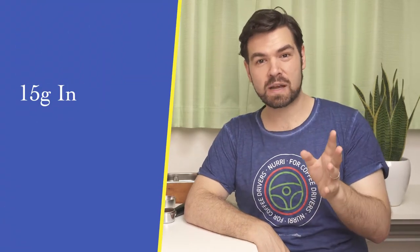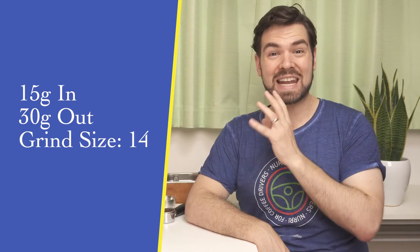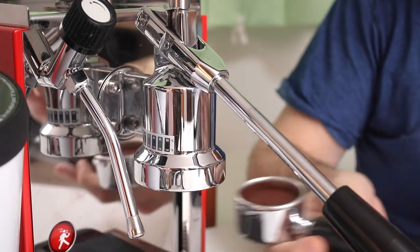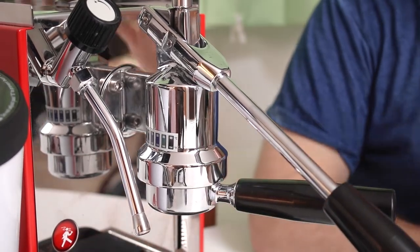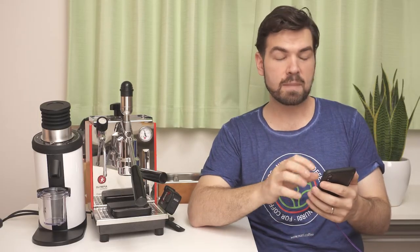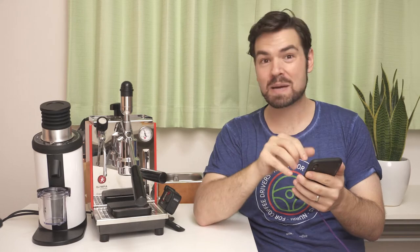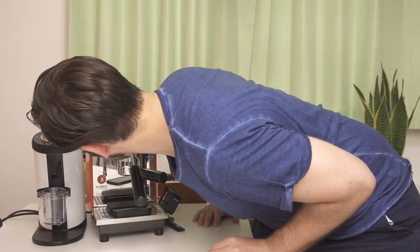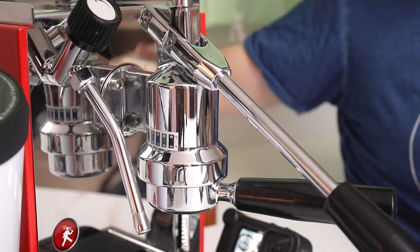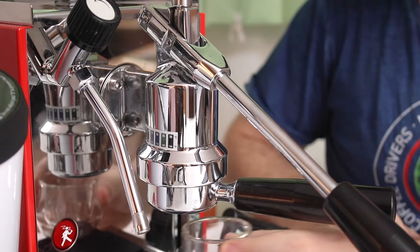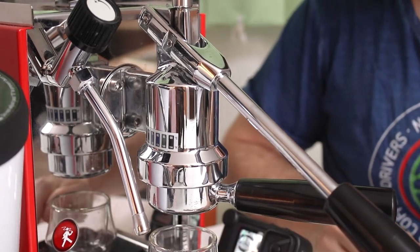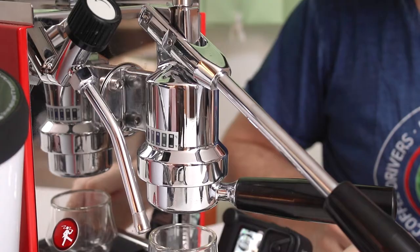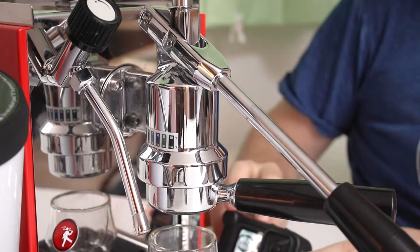Because these are lower density beans I don't want to go too heavy on the extraction, so I'm going to do 15 grams in 30 grams out. I'm going to put the group head temperature at 80 degrees. Now I have a little treat for you guys today - I'm going to start using the smart espresso profiler so you're actually going to be able to see the flow rate and the pressure on the graph as I'm pulling the shot. The group head temperature is right around 80 degrees. Let's go.